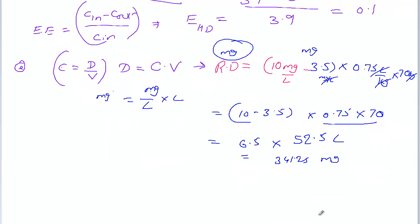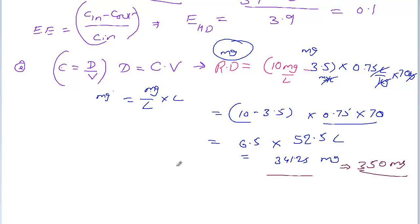We won't be able to dose exactly 341.25 mg, so it's better to round to a practical figure. The replacement dose required is 350 mg. We'll stop here and continue this problem in the next discussion.